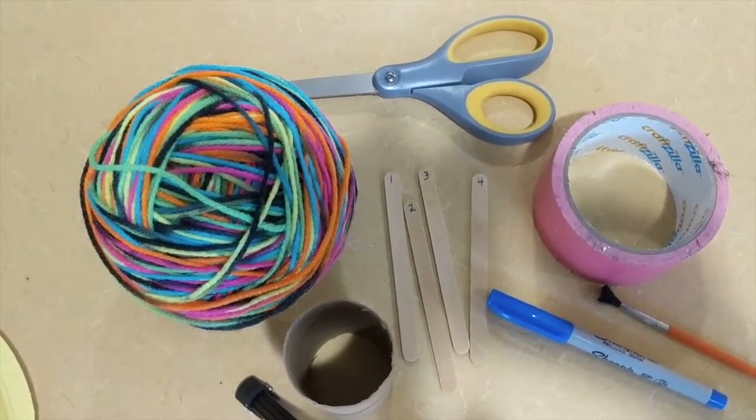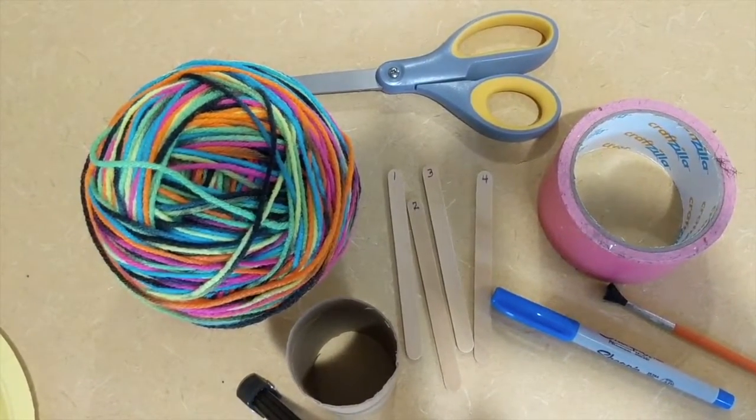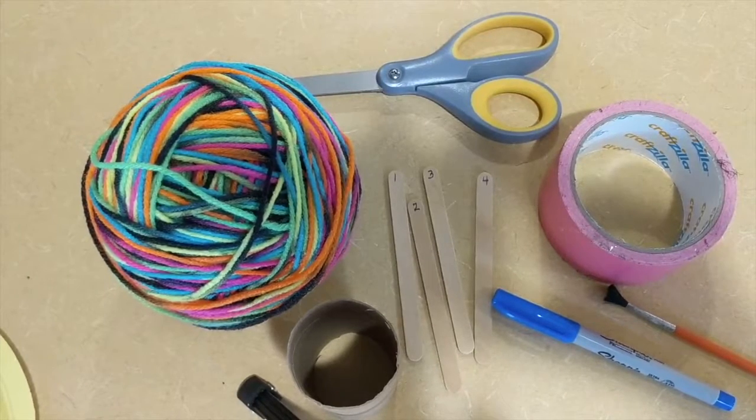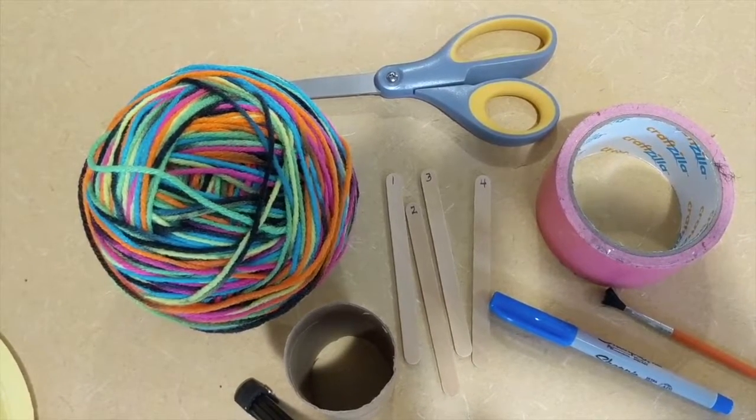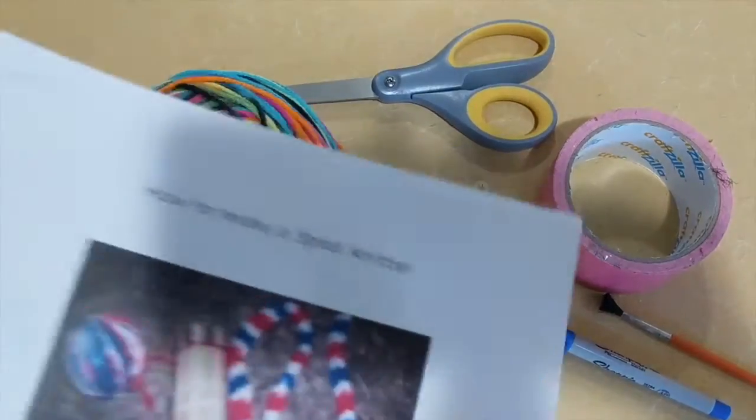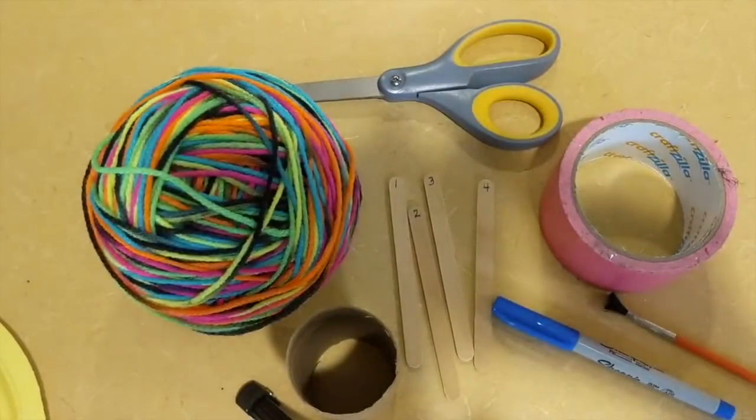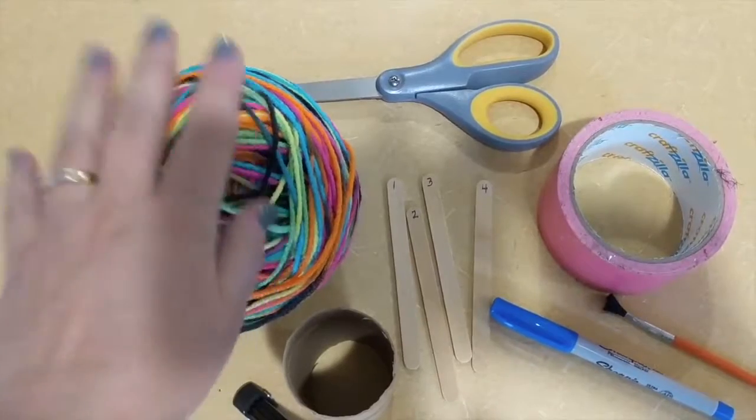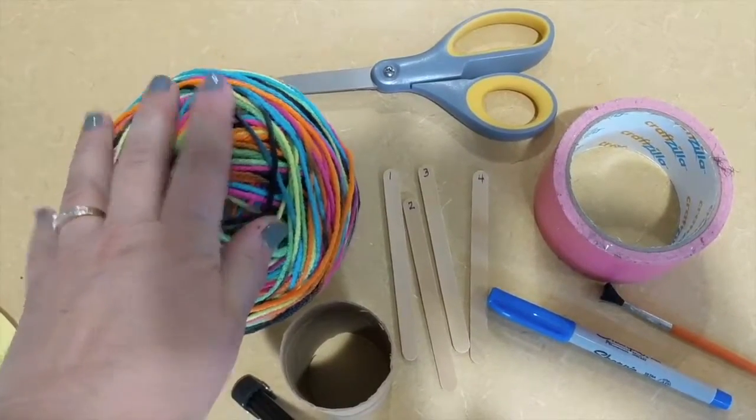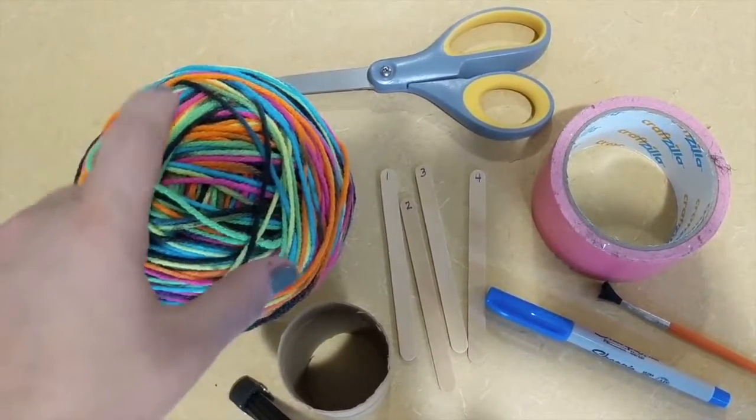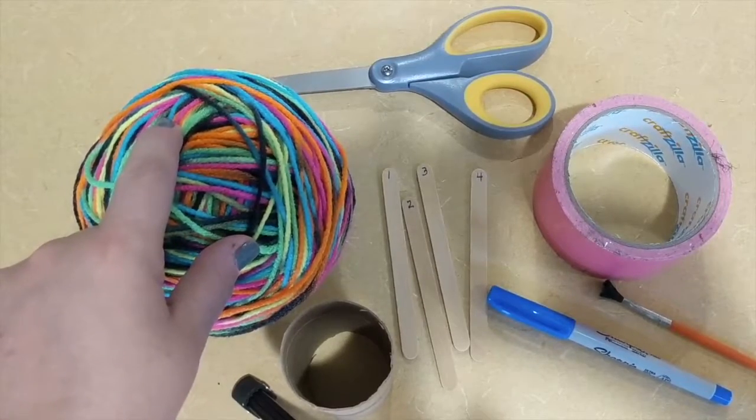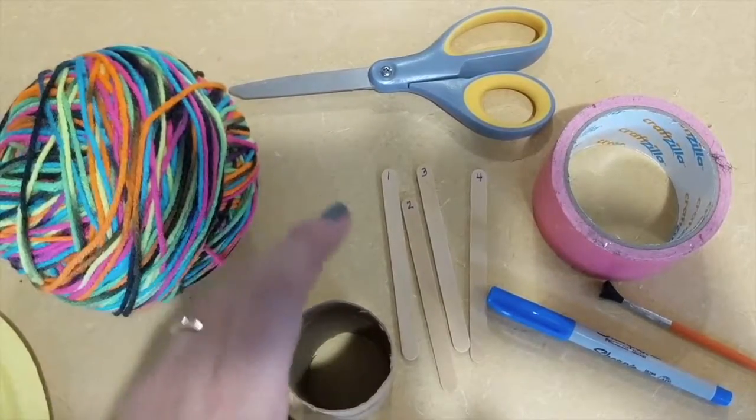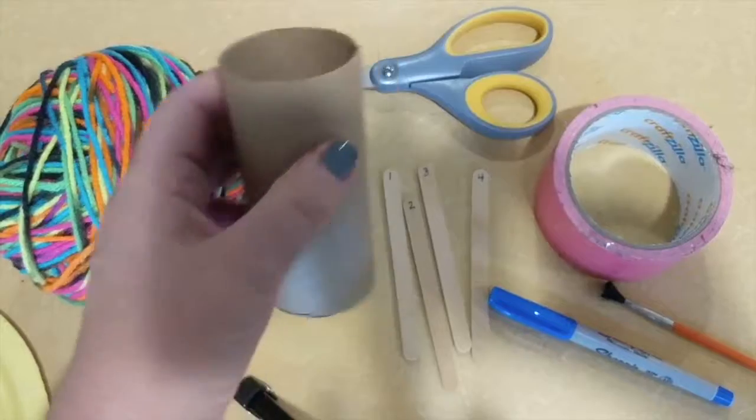I think we're ready to get started in making the spool knitter. So in your kit, I want to go over what's in your kit. You have your set of instructions which we're going to be following. You have yarn. I have a large ball of yarn which I'm going to use to demonstrate, but you have two smaller little skeins of yarn which you're going to use. You have a toilet tissue roll like this.